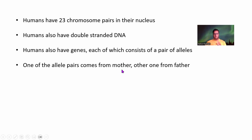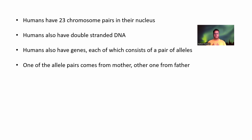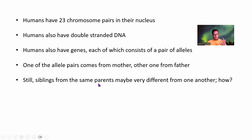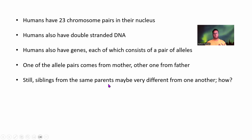One of the allele pairs comes from the mother and the other one from the father. But how does it happen? How exactly do we inherit these things from our father and mother? And in spite of us inheriting the same set of chromosomes from mother and father, how come our siblings are so different from us? This is also something we need to find out.